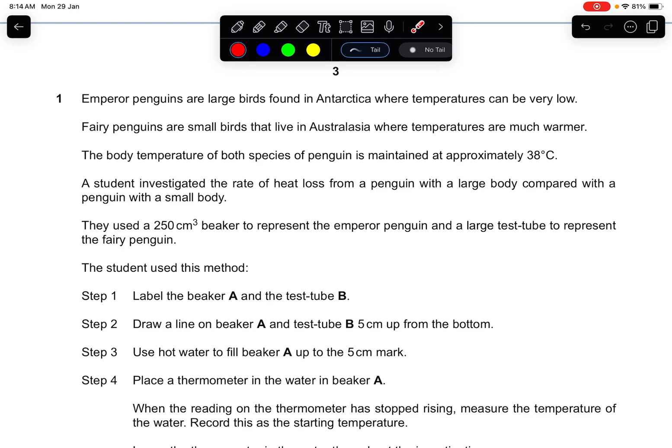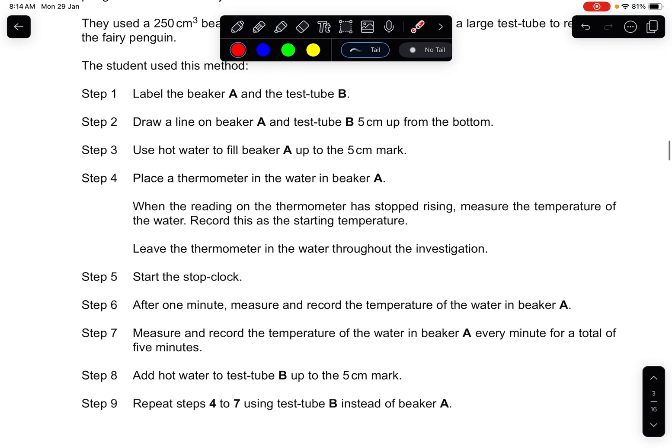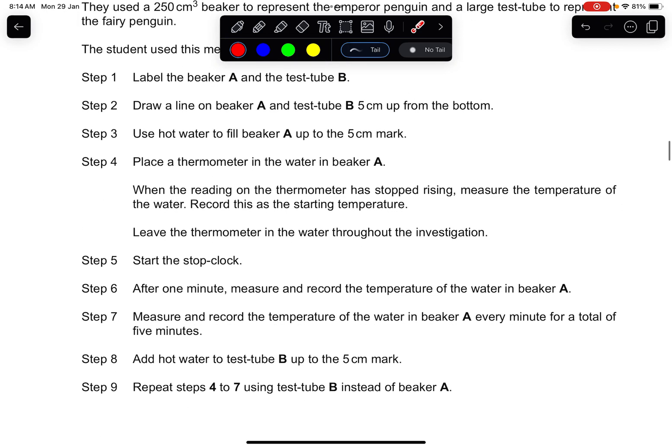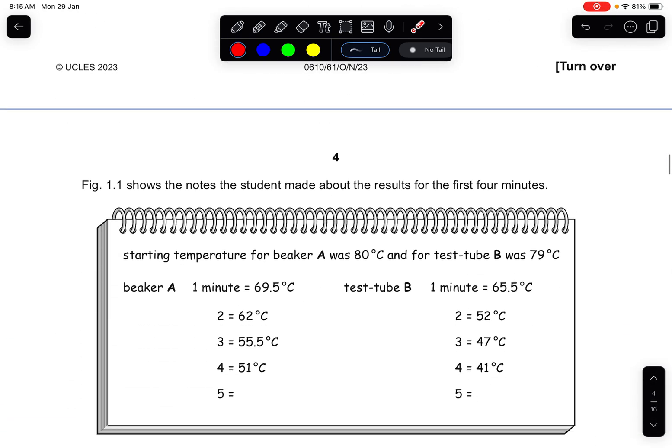They used a 250 centimeter cubed beaker to represent the emperor penguin and a large test tube to represent the fairy penguin. The student uses this method below, so just have a read through the methods they have shown because they might hint you something that you might need to answer for the questions.